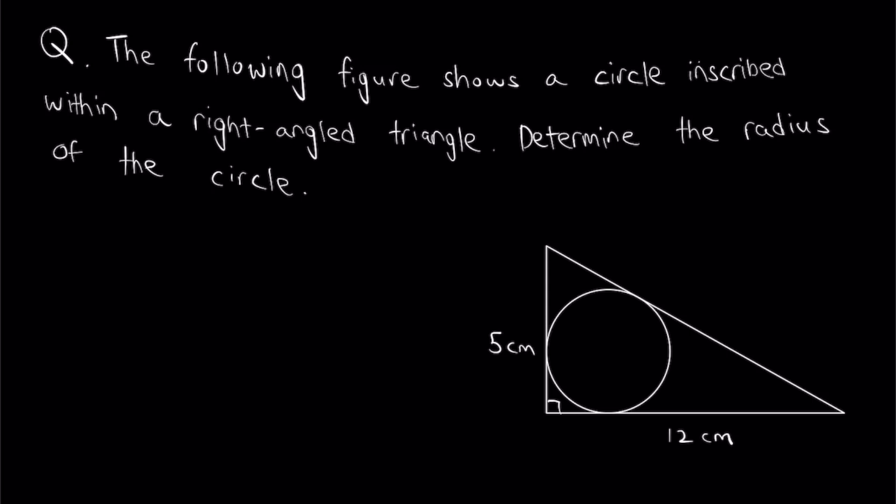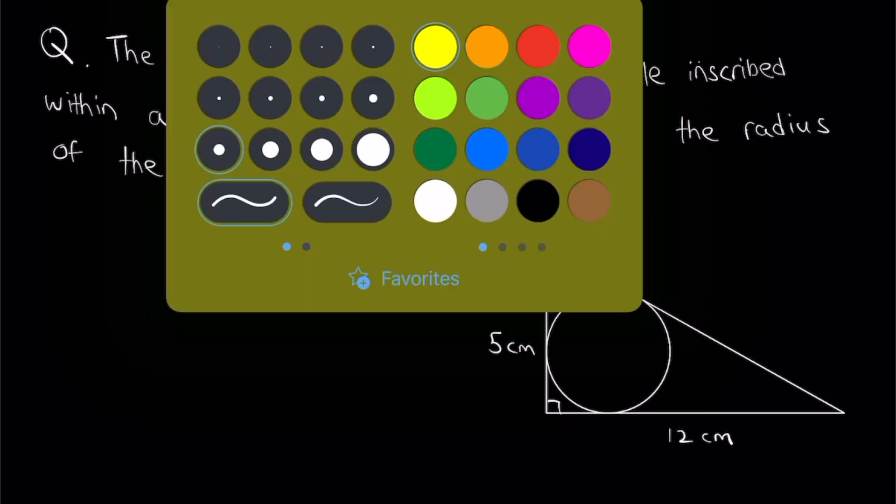Let's take a look at what the question is saying. Basically, the question is saying there is a circle inscribed within a right-angled triangle. So what does the word inscribed mean? The word inscribed basically means every single side of the right-angled triangle is touching the circle. As you can see, there are three points of contact.